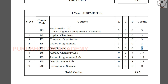Now for the labs in the second semester: Applied Chemistry Lab with 3 practical points and 1.5 credits; Python Programming Lab with 3 practical points and 1.5 credits; and Data Structures Lab with 3 practical points and 1.5 credits.